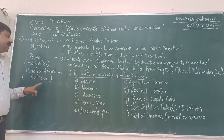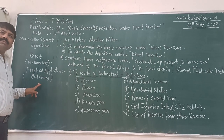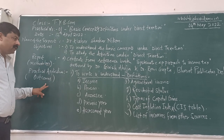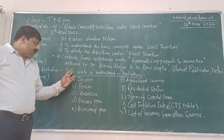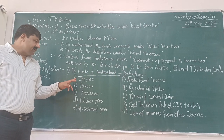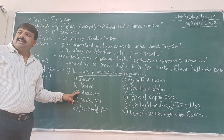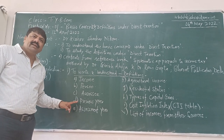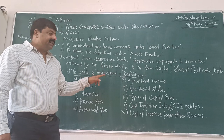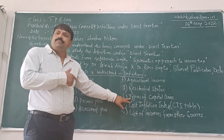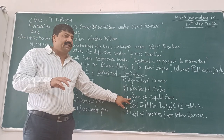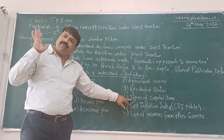Then for practical application outcomes — what did you write and understand from the definitions? First is income, then person, assessee, previous year, assessment year, agricultural income, residential status. Then I have written types of capital gains: short-term capital gains and long-term capital gains. You have to just write down the definitions.